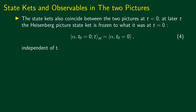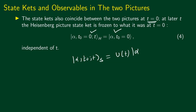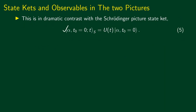Coming to the state kets: in the Heisenberg picture, the state kets remain the same at all times, whereas in the Schrödinger picture, the state kets change with time. The state kets at t = 0 coincide in both pictures, so we simply denote the initial state as |α, t₀=0⟩. But at later times, the states differ: in the Heisenberg picture the state is unchanged, while in the Schrödinger picture the state at time t is related to the initial state by the time evolution operator acting on the initial ket.